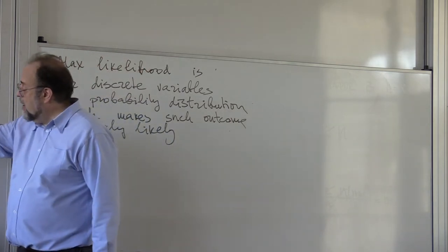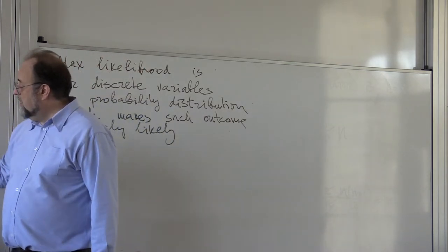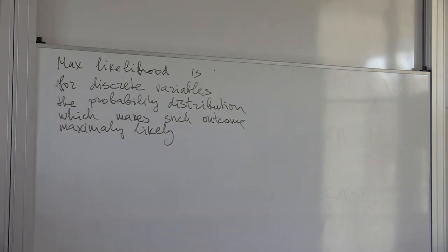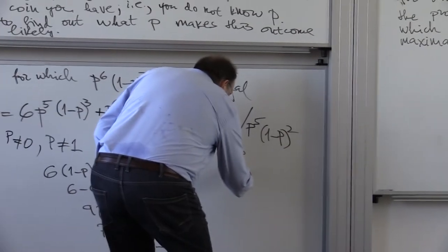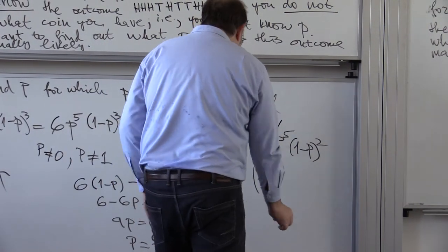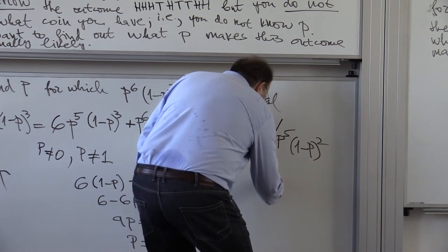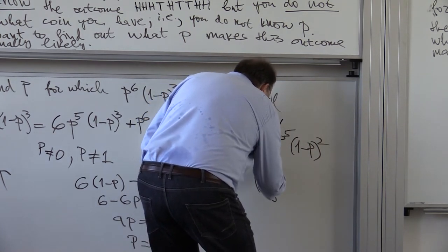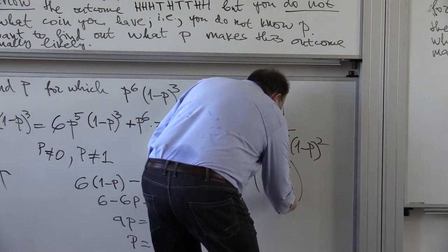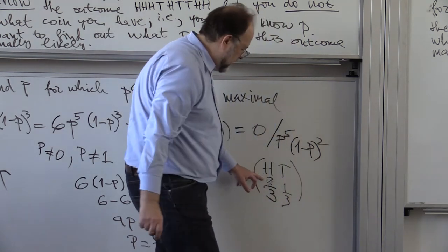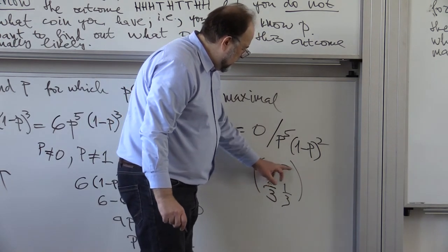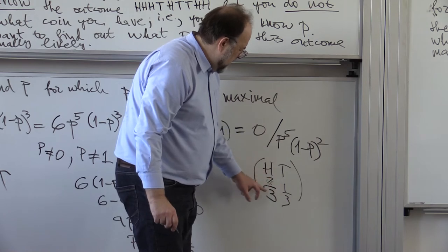In our example with the coin, we simply know that we derived here that P is two-thirds. So this is the head. Probability of the head is two-thirds, and probability of tail is one-third. So this is a discrete distribution with just two basic outcomes.